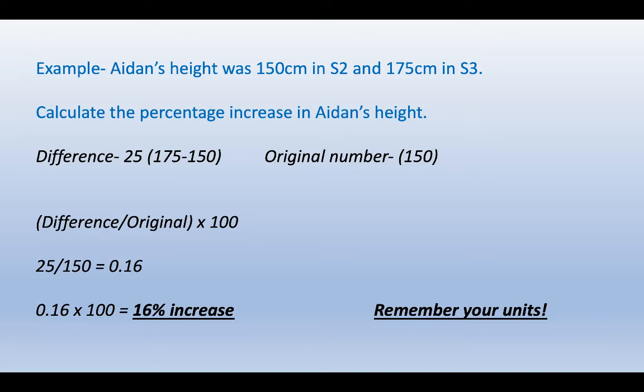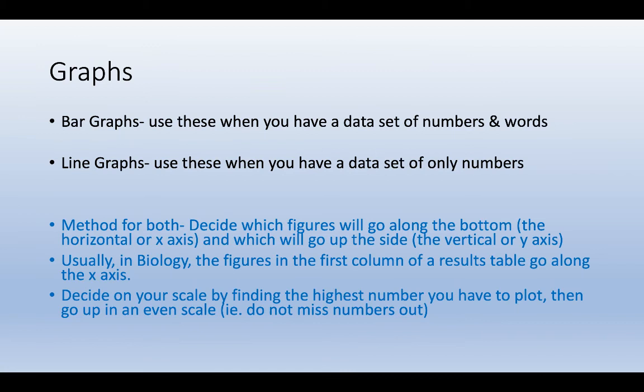One more example. Aidan's height was 150 centimeters in S2 and 175 centimeters in S3. Calculate the percentage increase in Aidan's height. Work out the difference: take the smallest number away from the biggest, which gives us 25. The original number was 150. Because this is a percentage increase, the original number had to be the smallest number, otherwise the height wouldn't have increased. Plug that into our formula: 25 divided by 150 gives us 0.16, then times it by 100. Again, always remember your units.